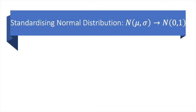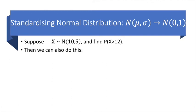So here's an example. Suppose X is a normally distributed random variable with a mean of 10 and standard deviation of 5, and we want to know what is the probability of X being greater than 12. Then we can standardize X as follows.